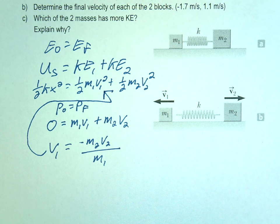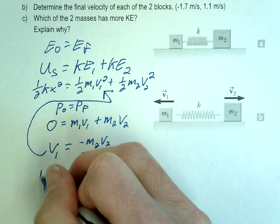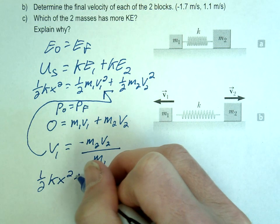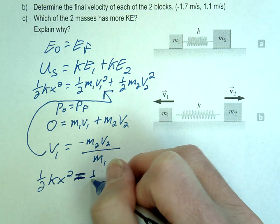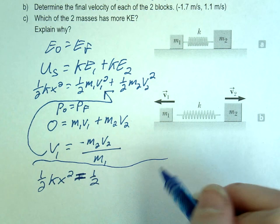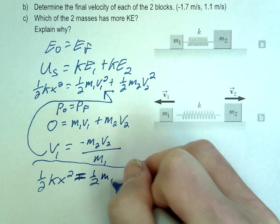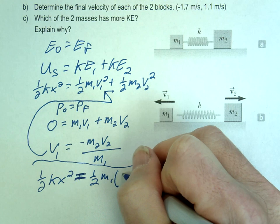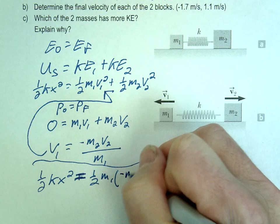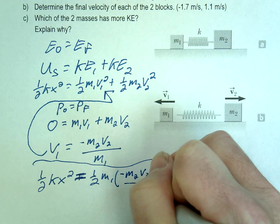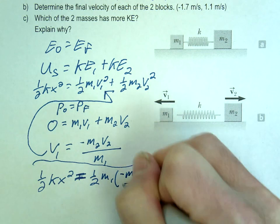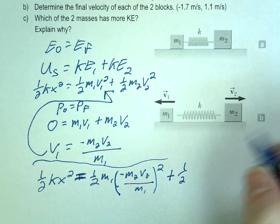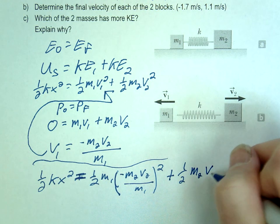Substitute that in there, right? So we have our 1/2 Kx² plus 1, oops, not plus, equals 1/2 M1. And then the substitution. Our substitution is negative M2 V2 divided by M1. And then don't forget that square right there. Plus 1/2 M2 V2 squared.